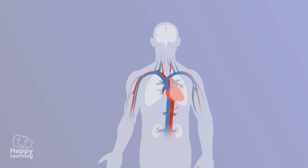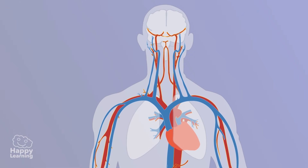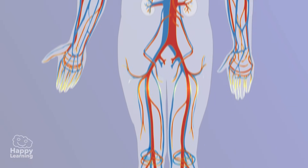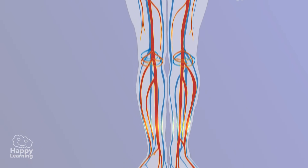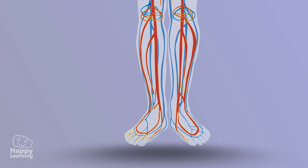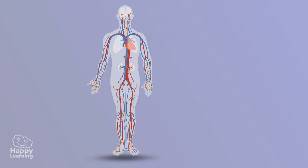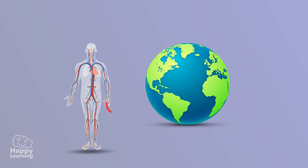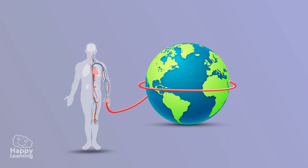I have a curiosity — do you know how much all of the arteries and veins would measure together put in single file? They would measure 96,000 kilometres, which would be equivalent to almost two and a half laps of the earth. It's incredible, right?